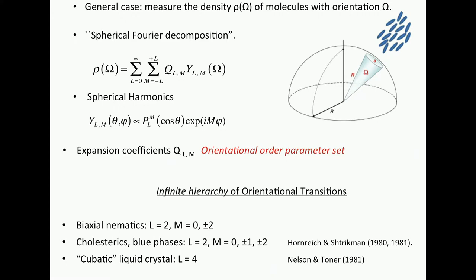So physicists, particularly in the early 80s, they climbed up this ladder to larger L, and they found that this was very popular in Israel. To look at it, there's a complex series of liquid crystals called cholesteric and blue phases, which are chiral, by the way. And they have plus or minus 1 there. So this plus or minus 1 may have something to do with chirality.